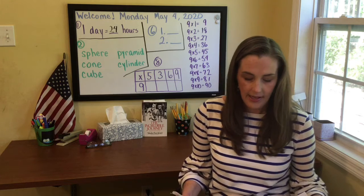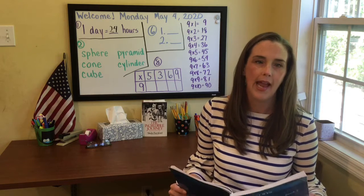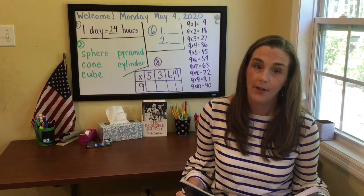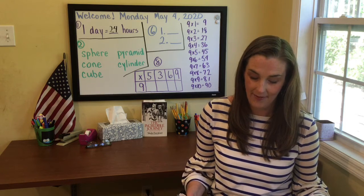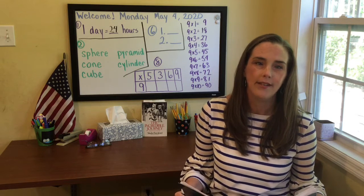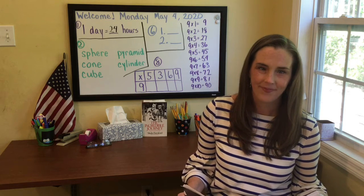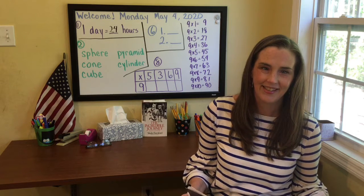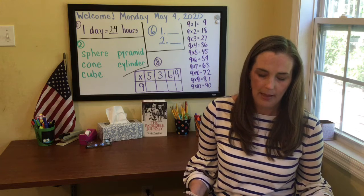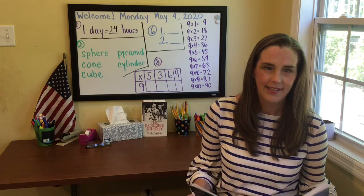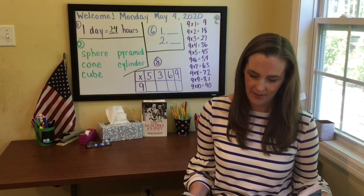Next it says one pound equals how many ounces? How many ounces are in a pound? That's something you haven't been learning quite as long, so think about that. One pound equals 16 ounces. So if you said 16 you're exactly right.